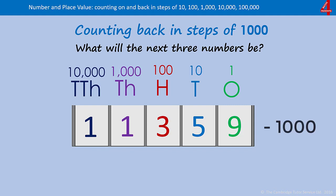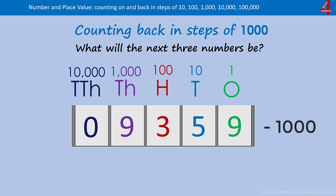Counting back in thousands: we have eleven thousand, three hundred and fifty-nine, which becomes ten thousand, three hundred and fifty-nine — the one in the thousands column becomes zero. We then take it to nine thousand, three hundred and fifty-nine, which means when we put the nine in the thousands column we have nothing in the ten-thousands column.